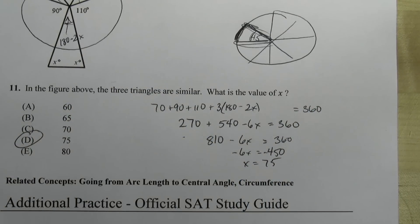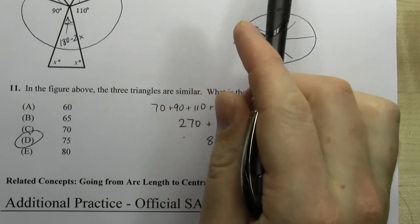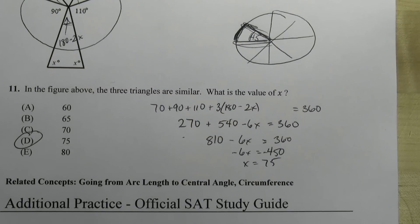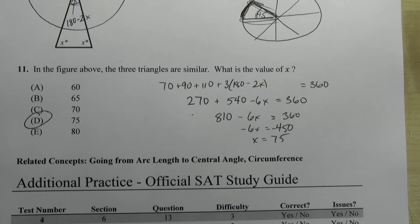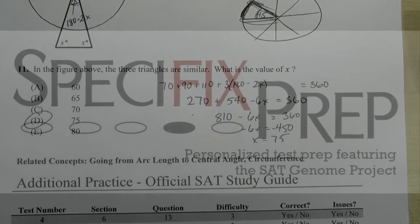Boom. All right, so these are two applications of using the fact that there are 360 degrees in a circle. One takes advantage of the proportional relationships and this one takes advantage of the fact that there doesn't have to be a circle there for it still to be true.